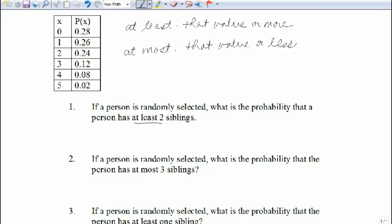If a person is randomly selected, what's the probability that a person has at least two siblings? So at least two means two or more. So if we go to our chart, here's two siblings, three or four or five. And I'm going to say it again, two or three or four or five.